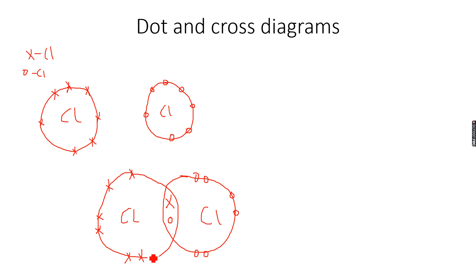When there are two pairs of electrons being shared, we have a double bond. When there are three pairs of electrons being shared, we have a triple bond.